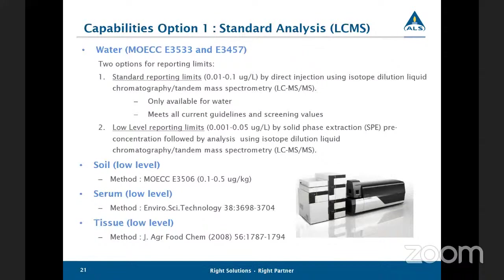For analysis, you have a few different options. The first option is the standard analysis by LC-MS. This is the most commonly used and the most consistent for any kind of regulatory purposes. For water samples, you have two options: standard reporting limits and low-level reporting limits. The standard reporting limits are done by direct injection LC-MS, and the low-level analysis has a solid phase extraction pre-concentration step prior to analysis by LC-MS. The standard level reporting limits do meet all current guidelines and screening values for Canada. These are all fully accredited and validated methods based on EPA methods, available for soil, serum, and tissue as well.